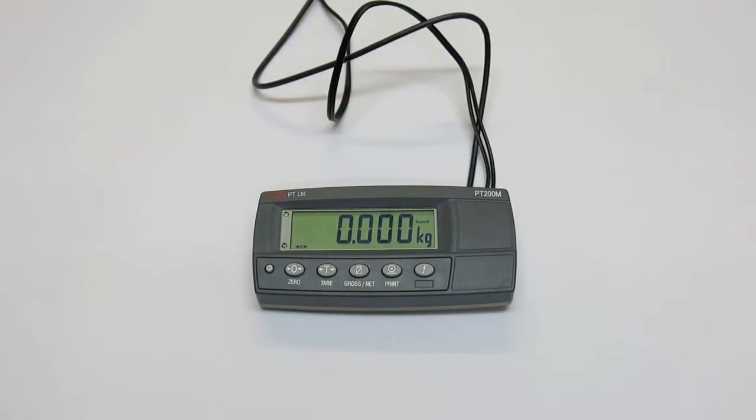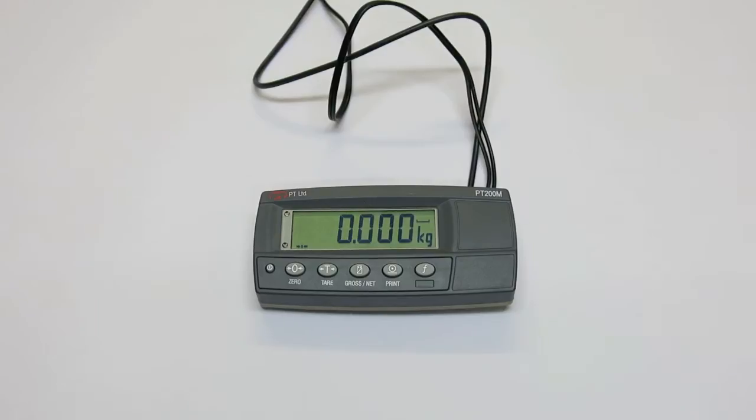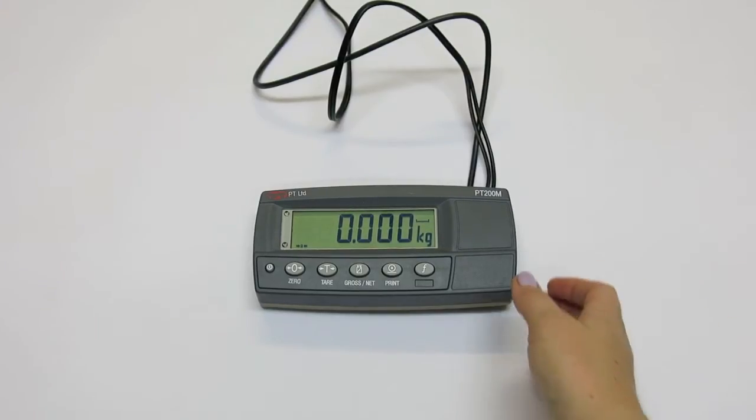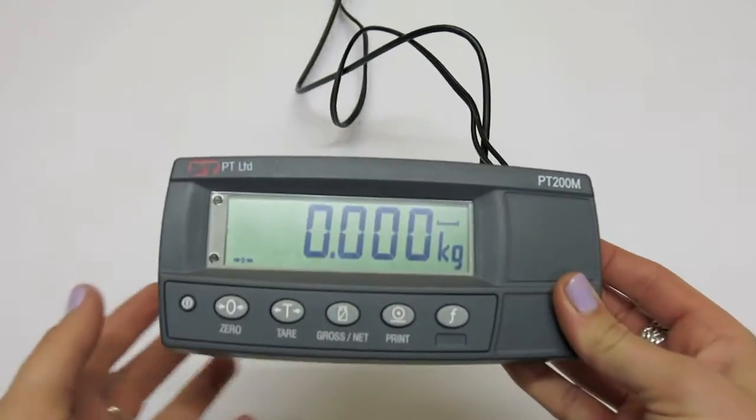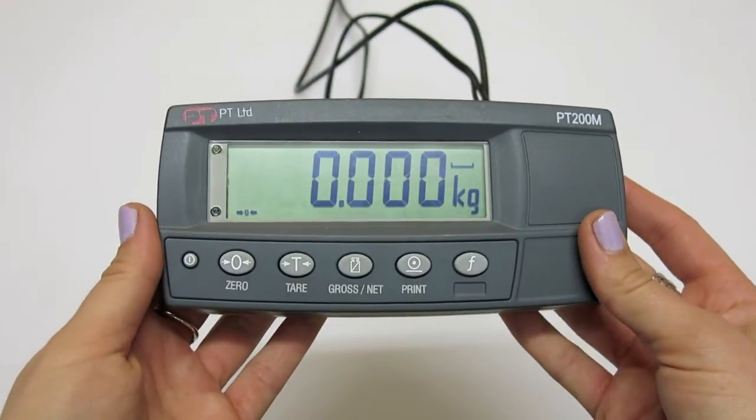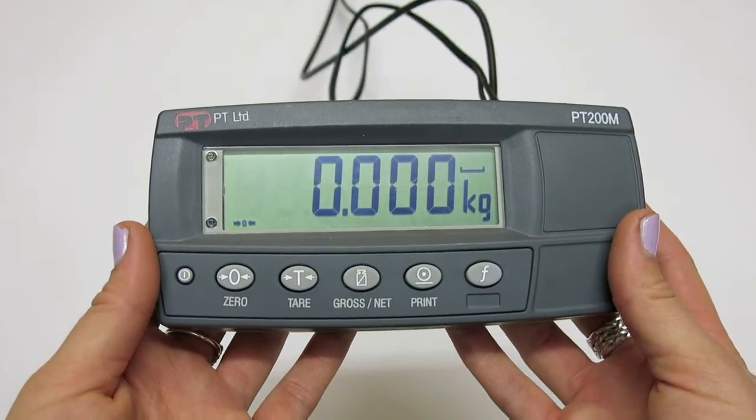Calibration for the PT200M indicator is explained in the Quick Start manual from pages 18 through 20. Calibration sets up the relationship between the input signal received by the indicator and the load reading that the indicator displays.